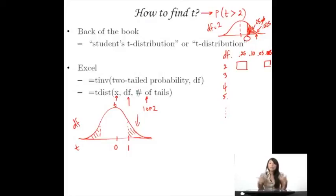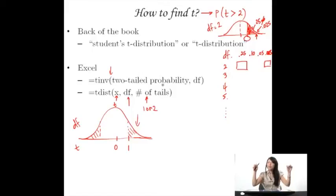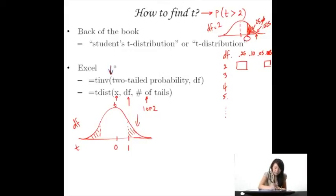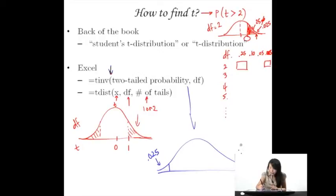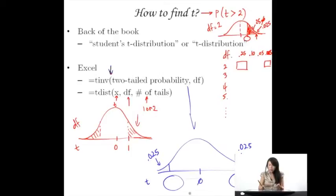So now you know how to get the probabilities. But what if you have the probability and you want to find the t-score? In that case you would use the inverse — TINV, for inverse. Here you would put in the two-tailed probability. So let's say we want to know what is the t-boundary if we wanted only 5% in our tails. So here's the situation: we have this distribution and we want these tails to be 0.025, just like a z-distribution, but we want to know what the boundary values are.